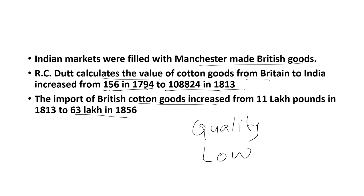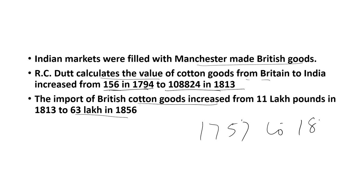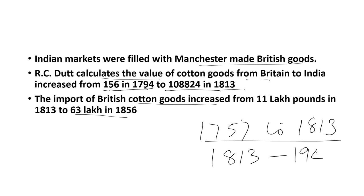From this, it is very clear that from 1757 — from the Battle of Plassey to 1813 — Indian goods were exported from India to Britain. But from 1813 onwards, British machine-made goods were imported to India and began to fill the Indian markets. The second stage came to be known as industrial capitalism.